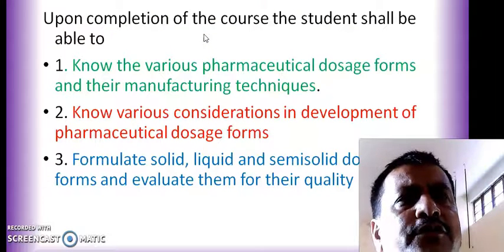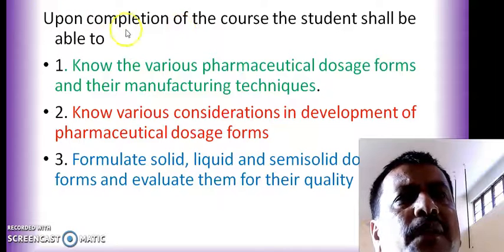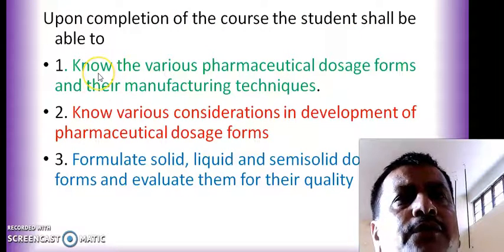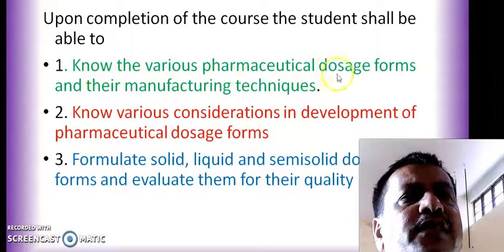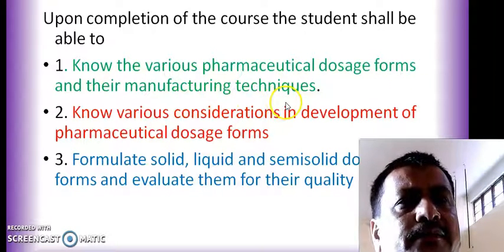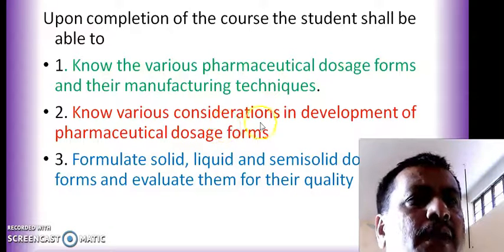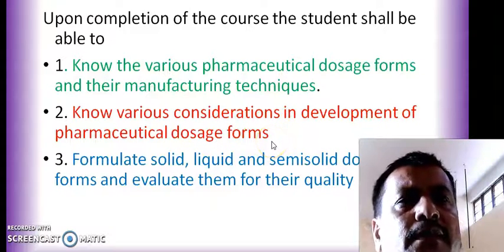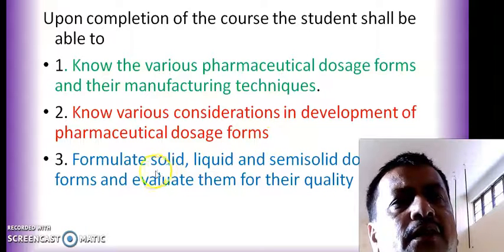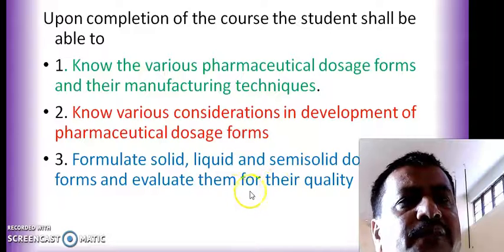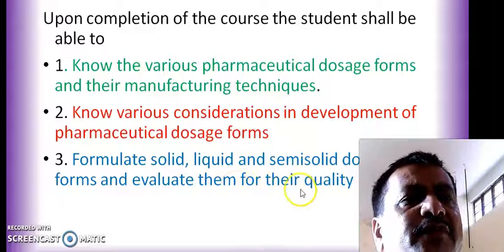The objectives are as follows: upon completion of the course, students shall be able to know the various pharmaceutical dosage forms and their manufacturing techniques, know various considerations in the development of pharmaceutical dosage forms, and formulate solid, liquid, and semi-solid dosage forms and evaluate them for their quality.